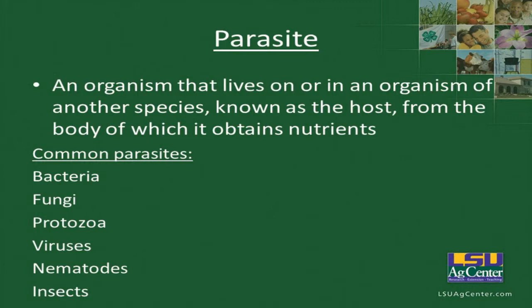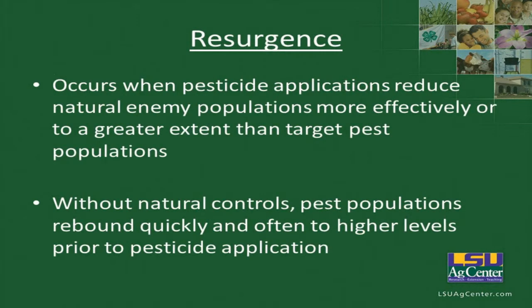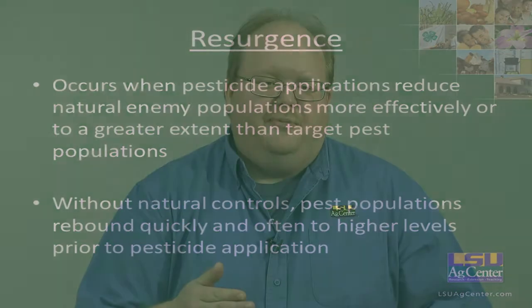These can also be parasites. An herbivore is an organism that feeds on plants. Without natural controls, pest populations rebound quickly, often to higher levels than prior to the pesticide application, as the insecticide kills off natural enemies that were feeding on the pest populations.